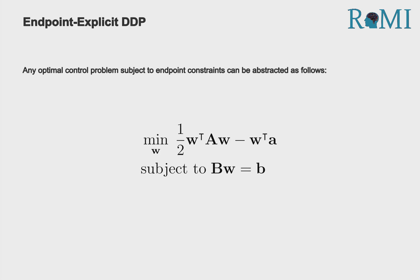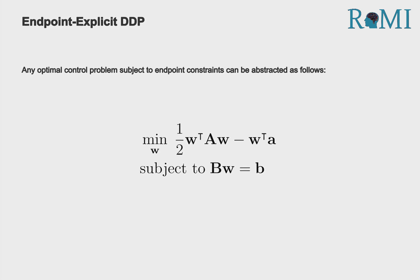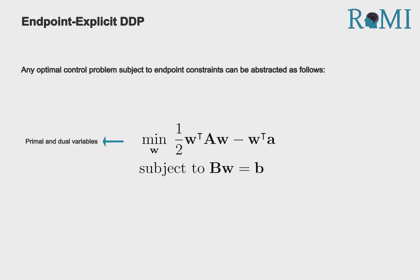Any optimal control problem subject to endpoint constraints can be formulated as follows. Here, w denotes the primal and dual variables associated with the optimal control problem.